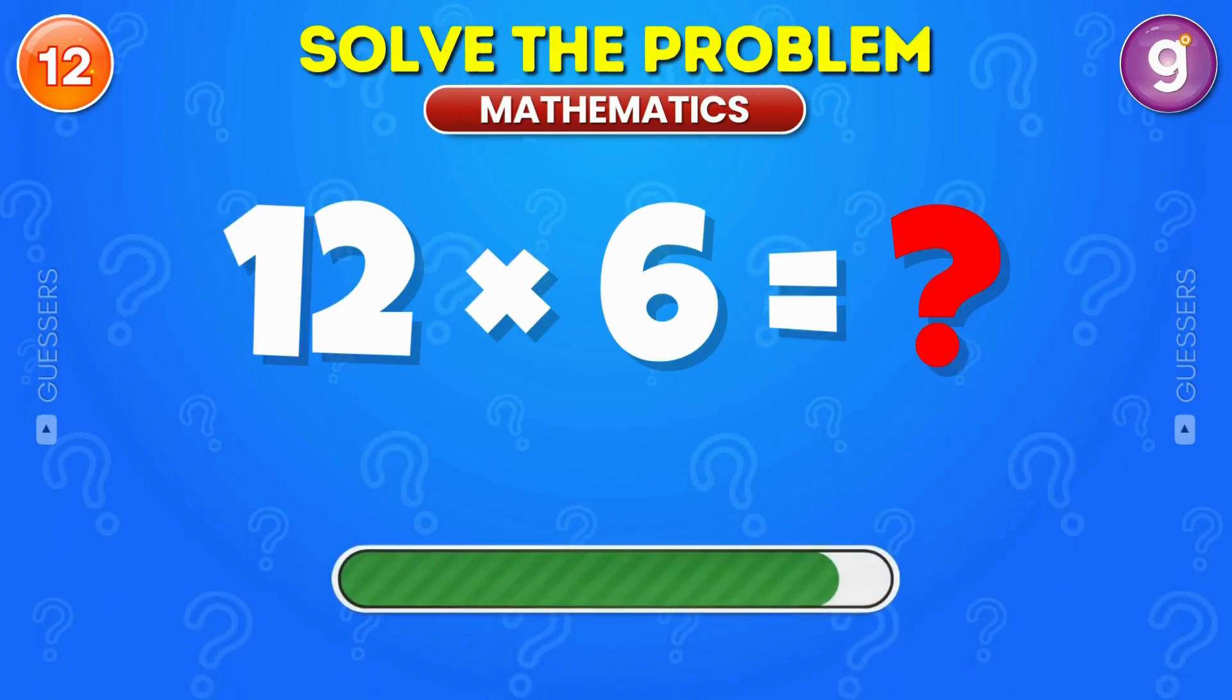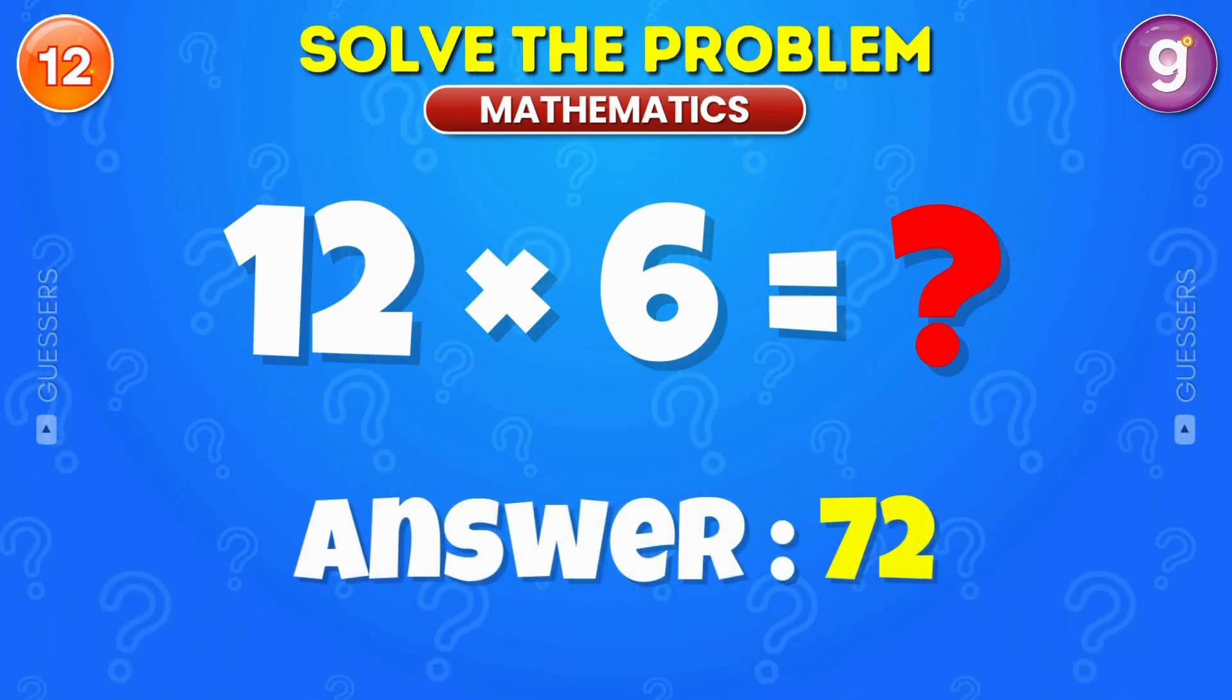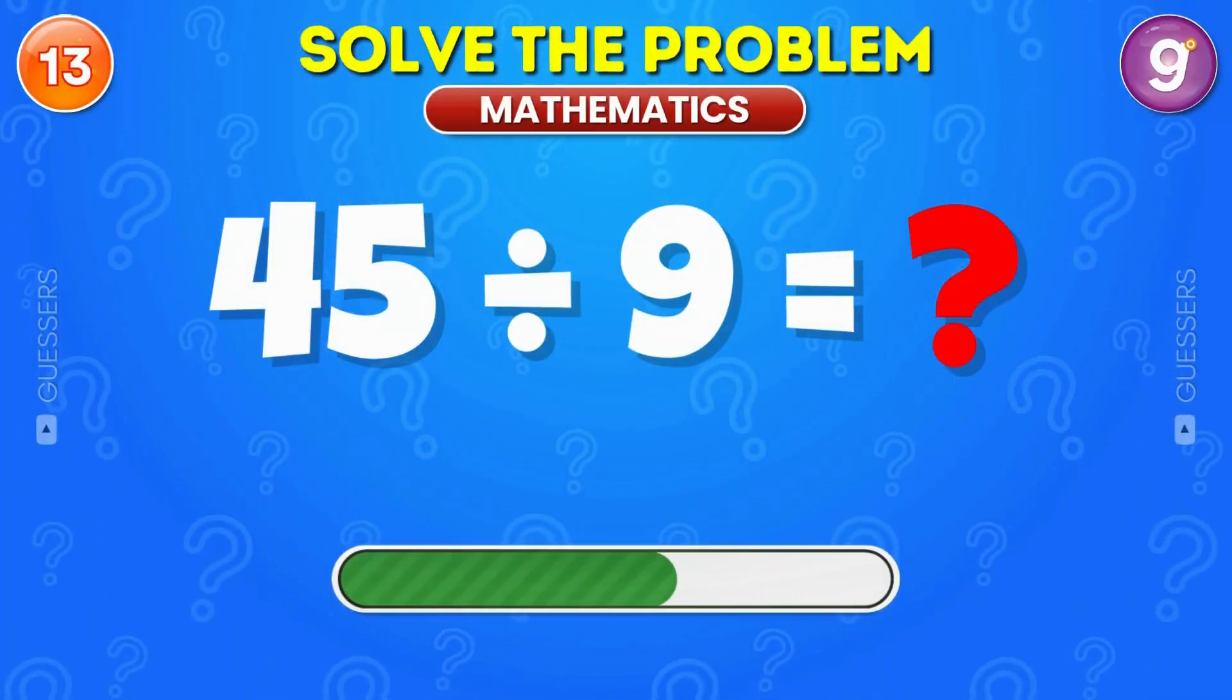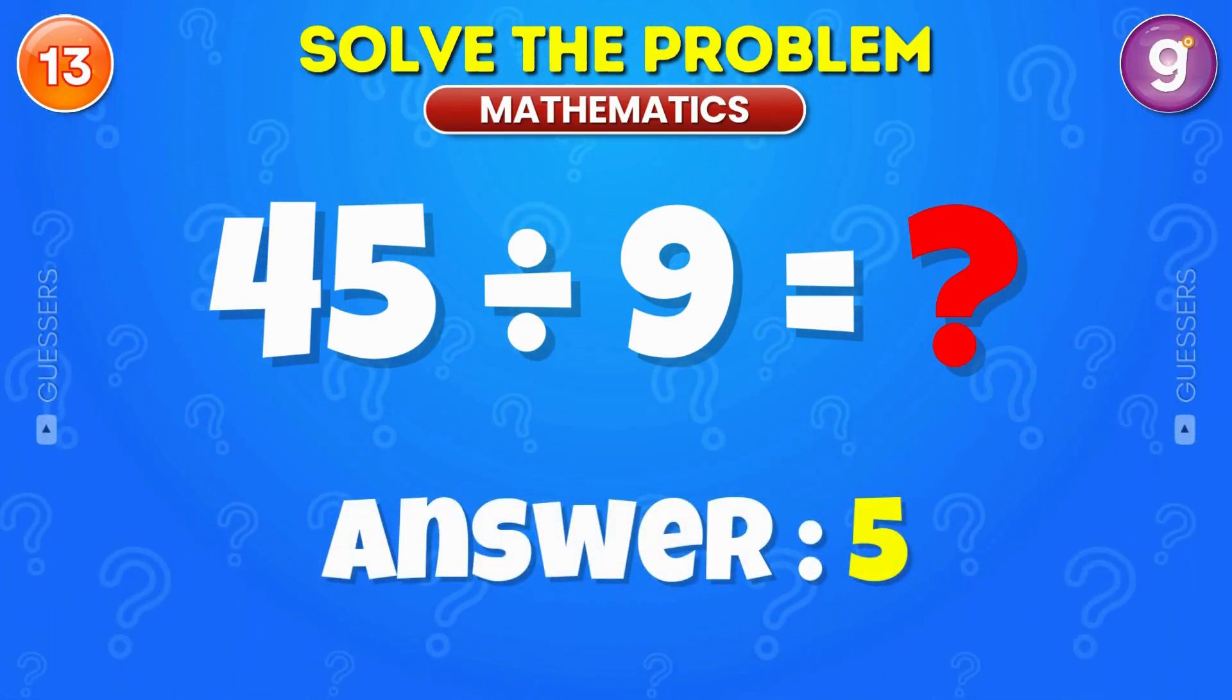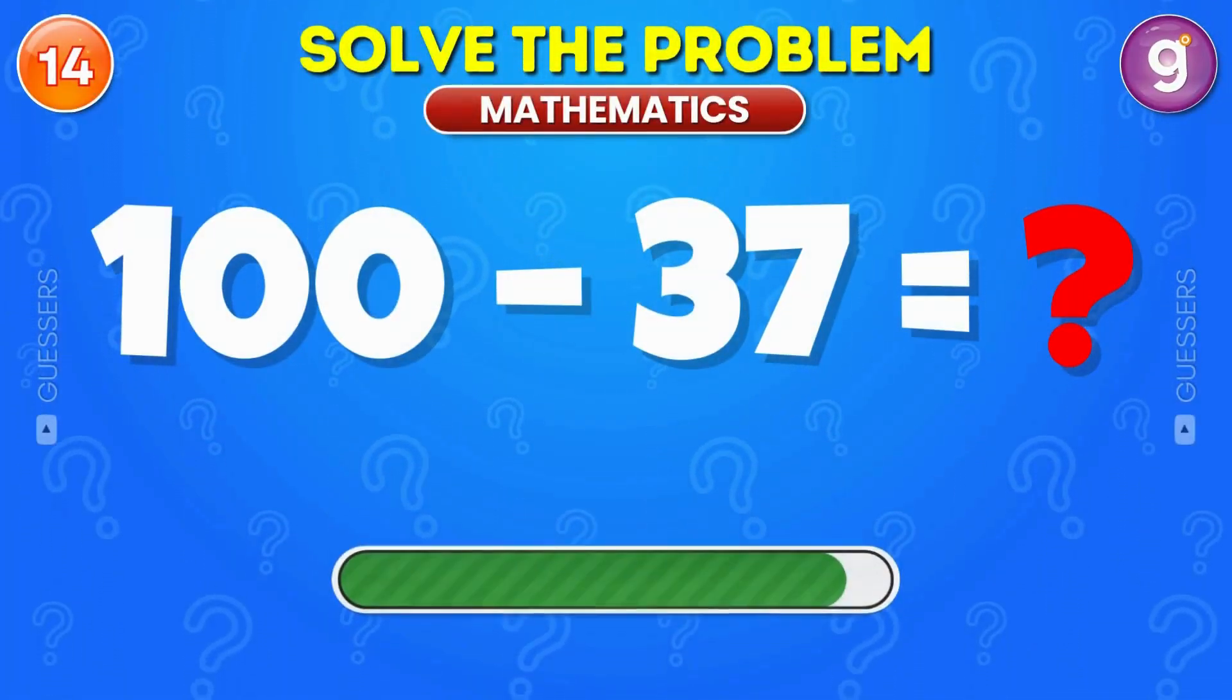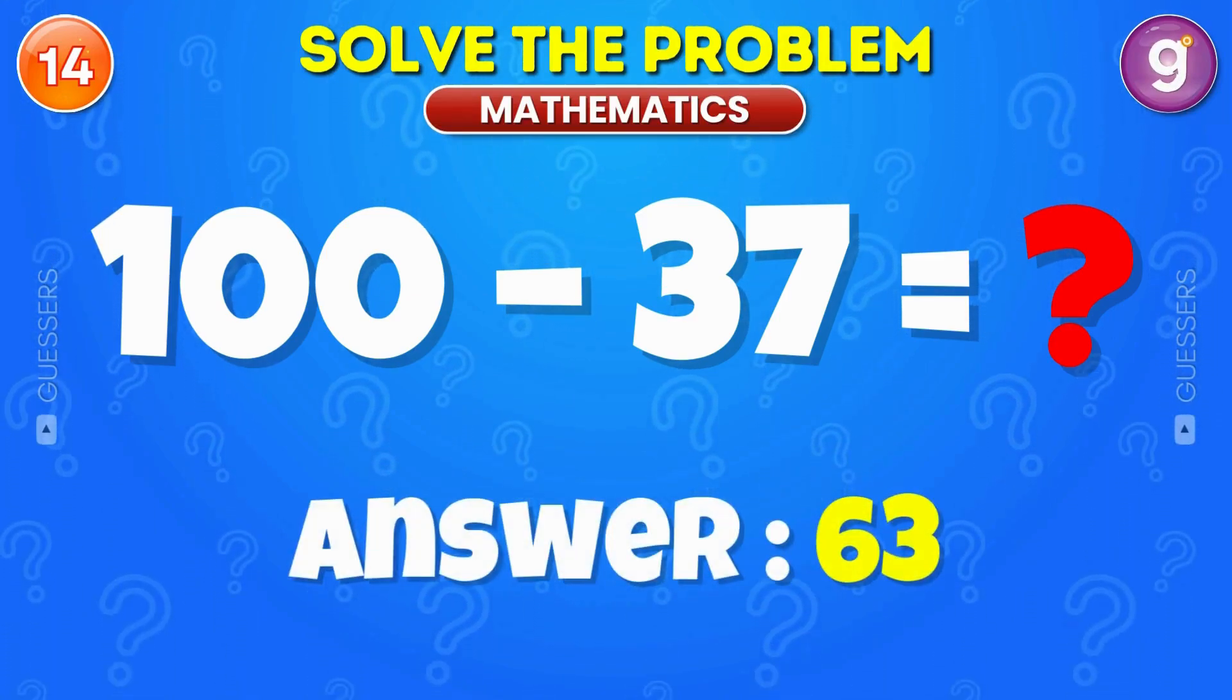Multiply 12 by 6. The answer is 72. Divide 45 by 9. The answer is 5. Subtract 37 from 100. The answer is 63.